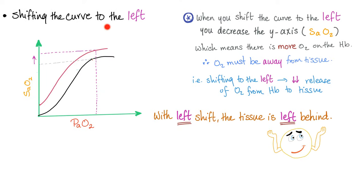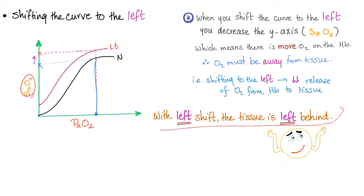Now let's shift the curve to the left. The normal curve is the black one and the left-shifted curve is the red one. Take a constant amount of PaO2 and go upward — the black one has lesser saturation than the red one. The red one has increased saturation, meaning the hemoglobin is more saturated with oxygen. That means loading — you are keeping the oxygen on the hemoglobin and not giving it to the tissue. With a left shift, the tissue is left behind.